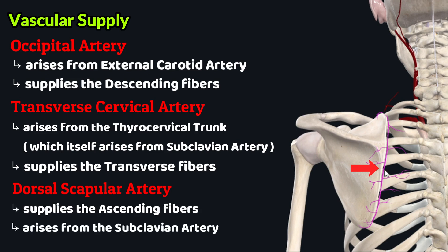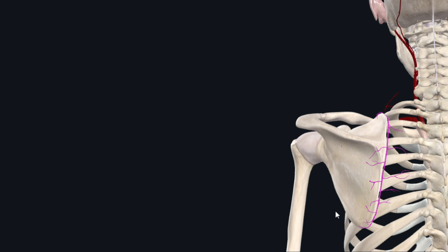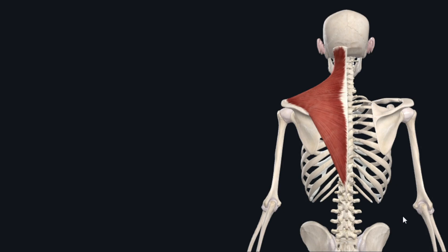The dorsal scapular artery arises from the subclavian artery. So that was about the vascular supply of the trapezius muscle. Now let's look at the actions performed by the trapezius muscle. As we studied, the trapezius muscle has three different groups of fibers, and these three groups individually perform different functions.